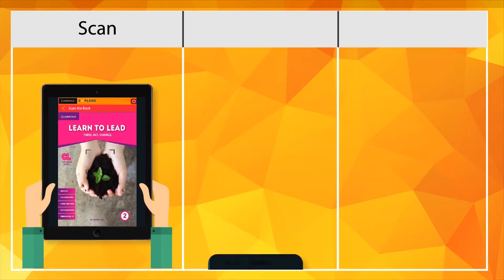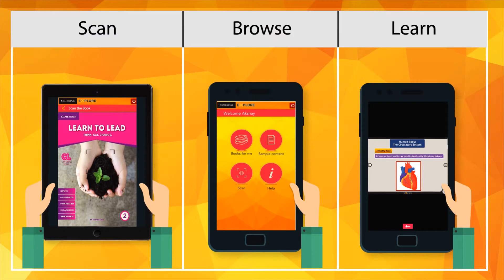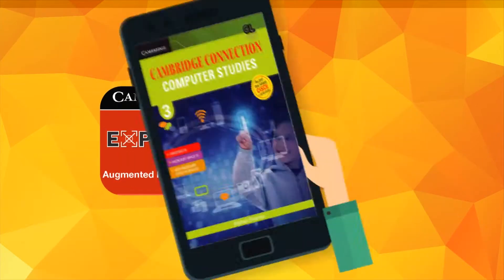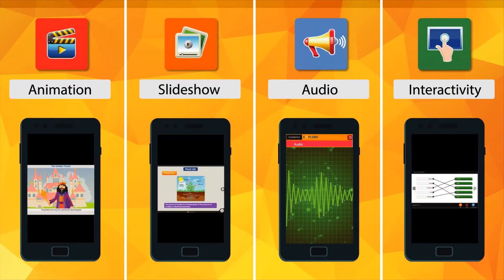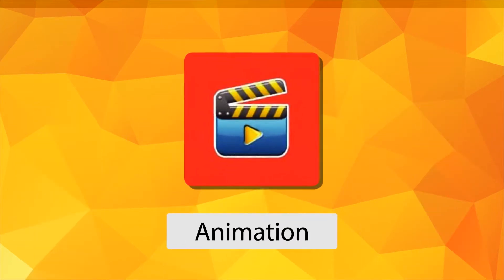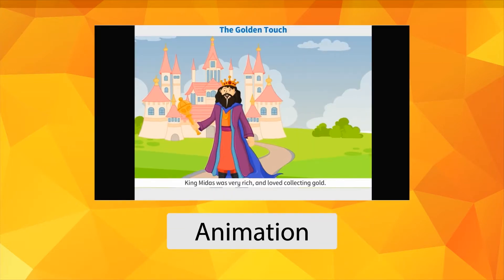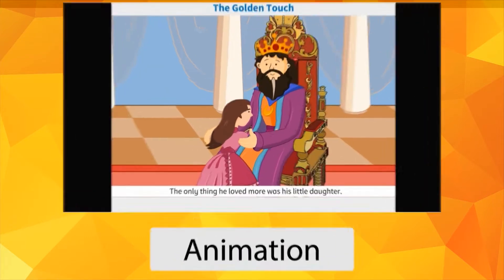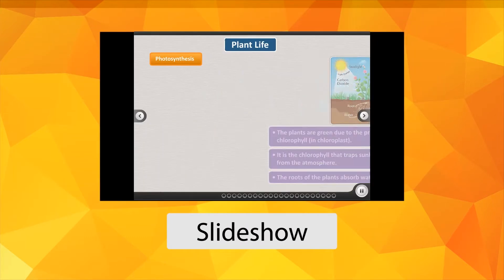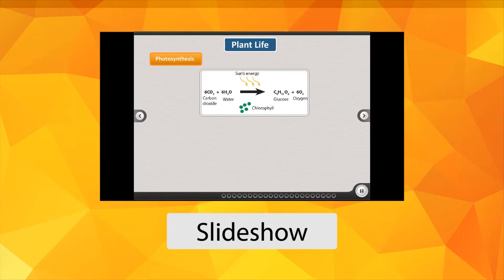Scan, browse, learn. The Cambridge Explore app provides the opportunity to learn beyond books with various types of digital learning objects, which include animation that provides a rich learning experience to help memorize what is being taught. Slideshow further explains important concepts.